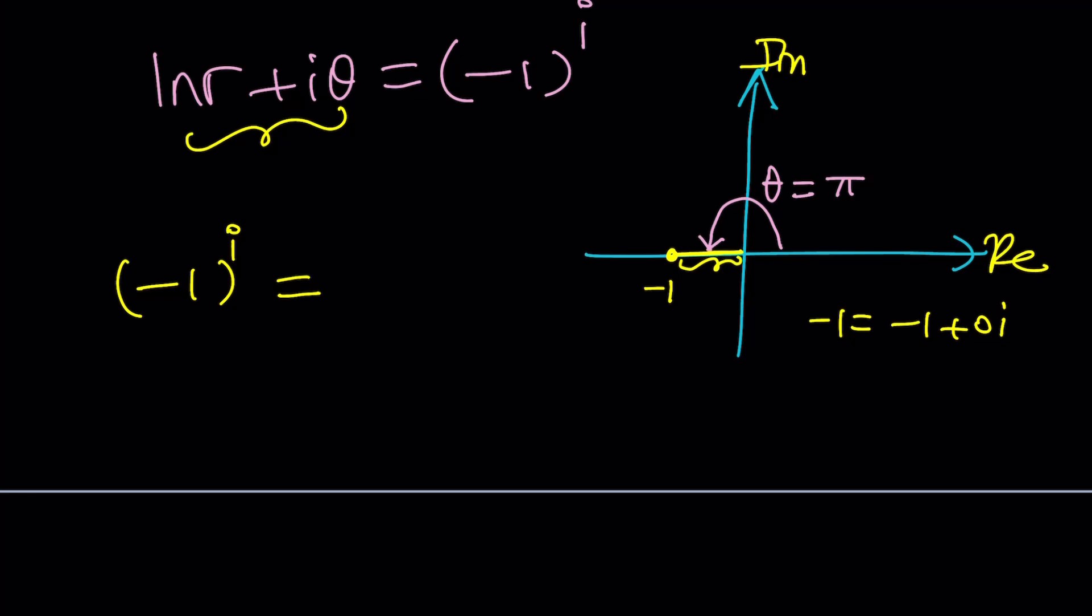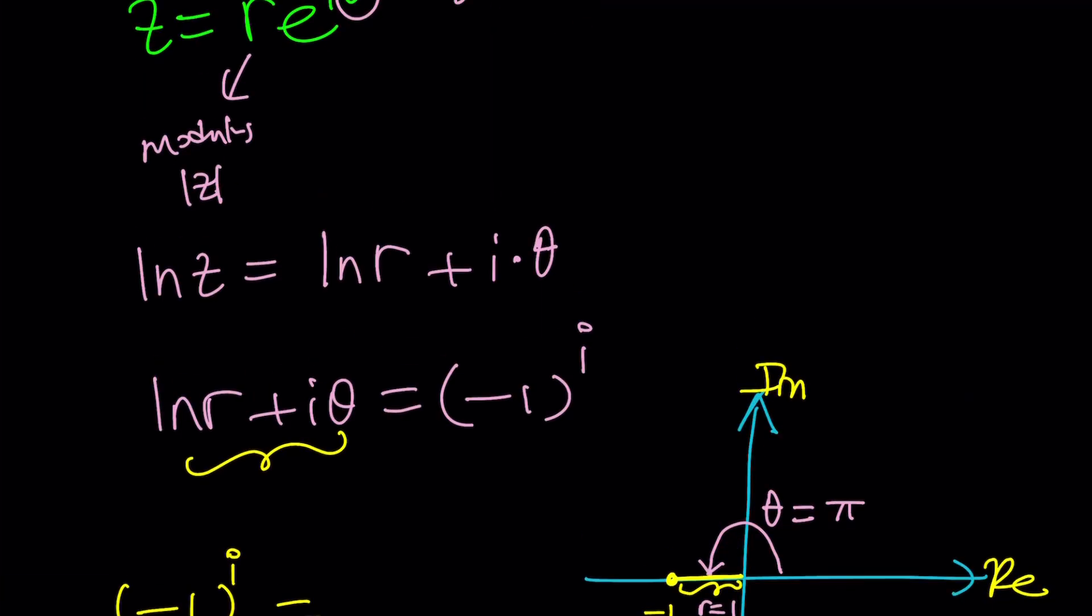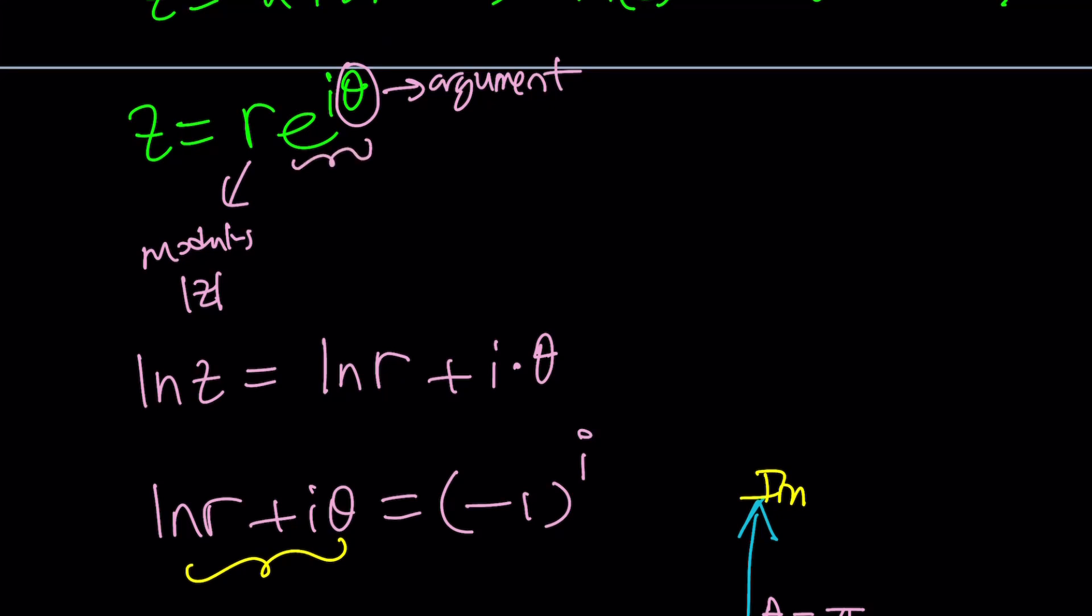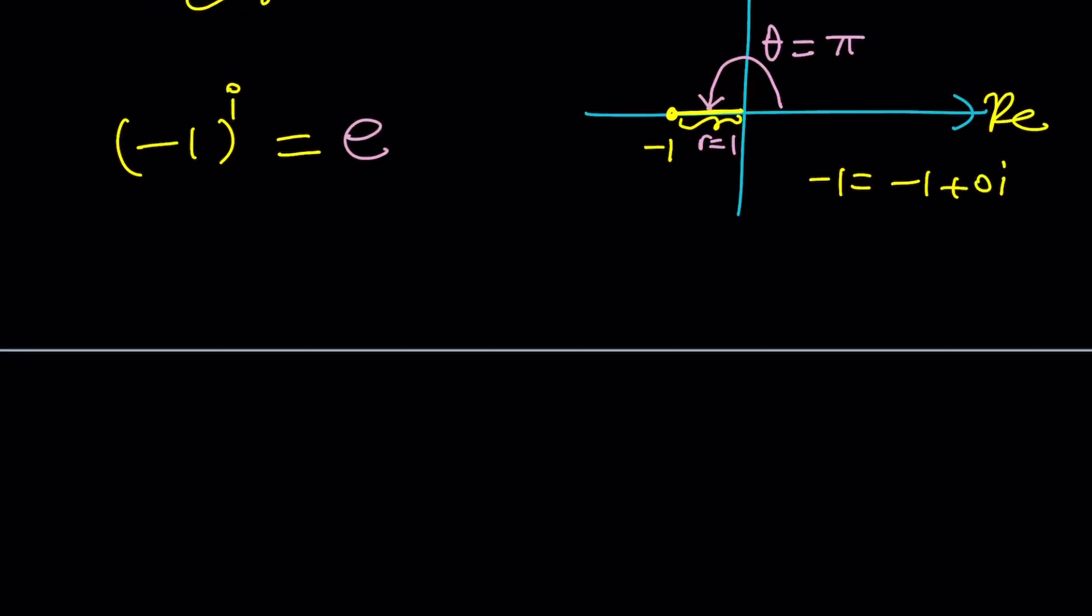So let's go ahead and do this then. And r is basically one because it's distance from zero, the absolute value of negative one. So we're going to write it as e to the i theta and theta is pi. So it's going to be e to the power i times pi.